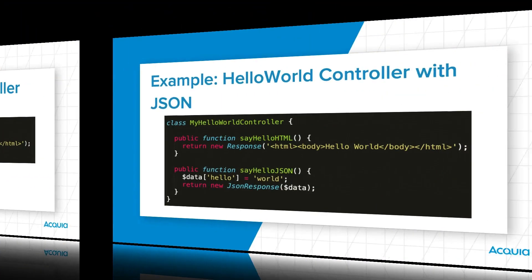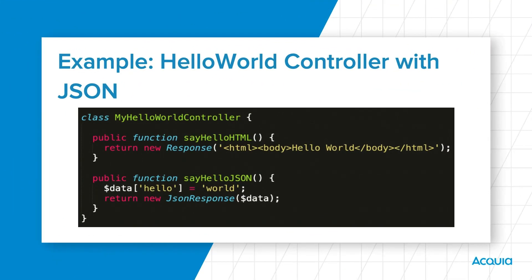Expanding upon our example, be sure to realize that a controller can return various formats. I've introduced another method called sayHelloJSON — it returns a response of data in JSON format. So there we have it: a controller returns a response. It's that simple.